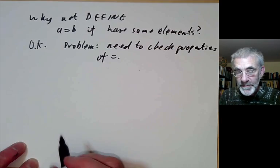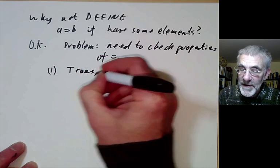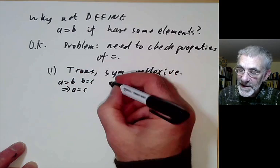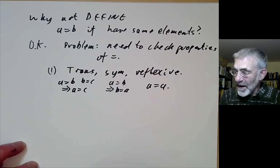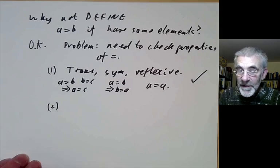So first of all, we need to check there's an equivalence relation. In other words, it has to be transitive, symmetric and reflexive. So that means that A equals B, B equals C implies A equals C and this says A equals B implies B equals A and this says that A equals A. And these are all okay. You can check that this definition does indeed have the usual properties of an equivalence relation.